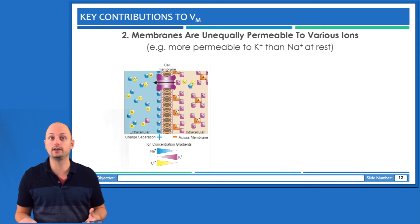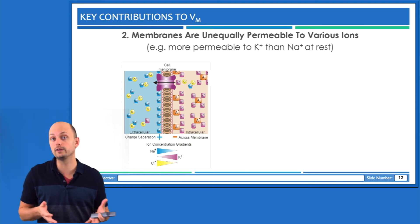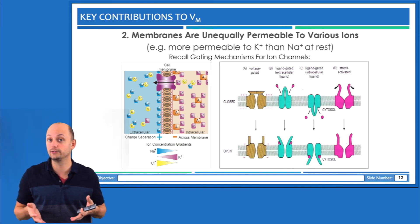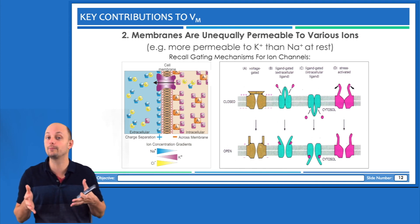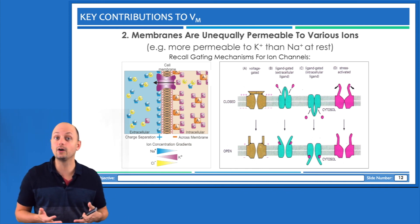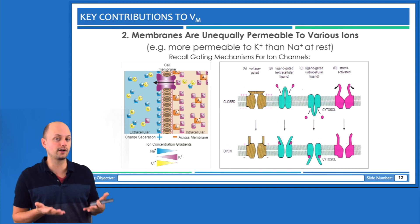When we use the term permeability in our course, we're essentially thinking about whether ion channels are open or whether they're closed. And so this is where all those different gating mechanisms that we talked about in the membrane transport unit are really going to start to come back to haunt us a little bit. When channels are open and we increase the permeability, we allow ions to move down their concentration gradients from high to low.